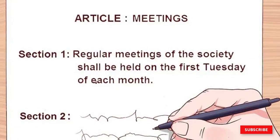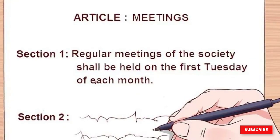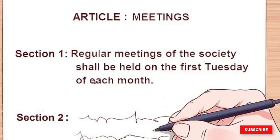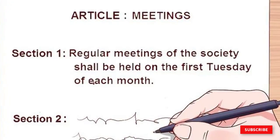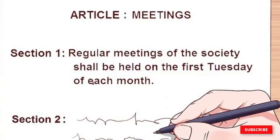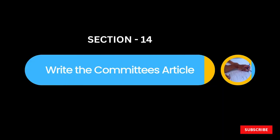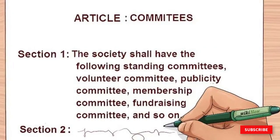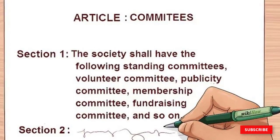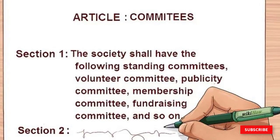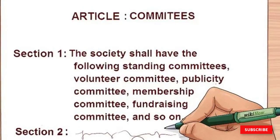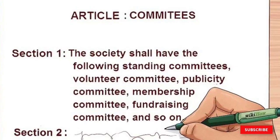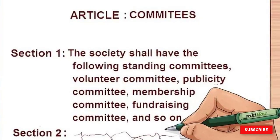Article V covers several sections that outline how often meetings will take place — quarterly or semi-annually — where the meetings will take place, and how votes can be cast for motions. This article also covers committees specific to your organization, which might include a volunteer committee, publicity committee, membership committee, or fundraising committee, along with a brief description of how committees can be formed.